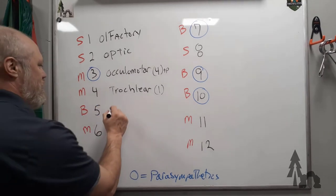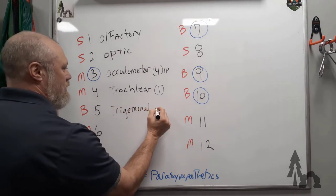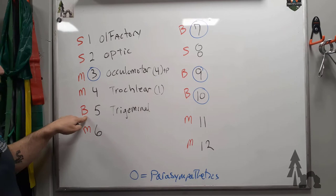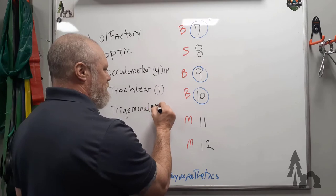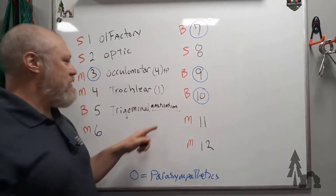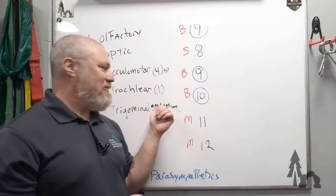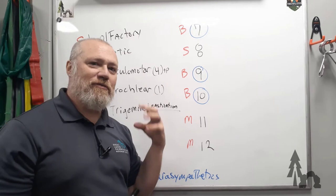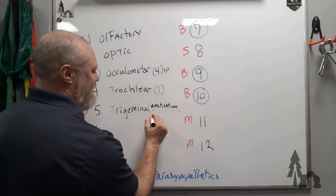Five is going to be your trigeminal nerve. The trigeminal nerve is both sensory and motor. Your motor is going to be the muscles of mastication—mastication with a T, that means chewing, the muscles of chewing. Don't mix that up, muscles of mastication.